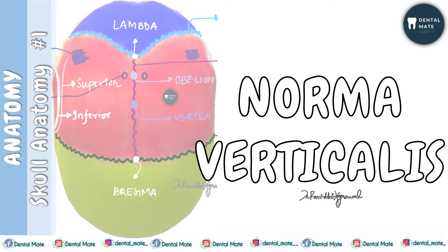Hello everyone. Starting off with skull anatomy today, we'll be discussing Norma Verticalis. This is the vertical or the uppermost aspect of the skull. The word 'norma' means an aspect of something — basically, which aspect of the skull we are discussing. The vertical aspect is Norma Verticalis. So let's begin.